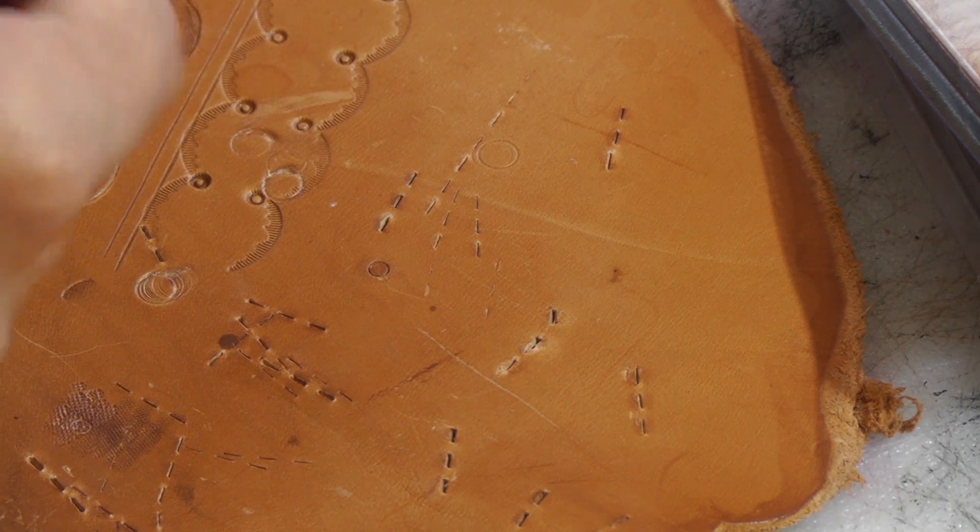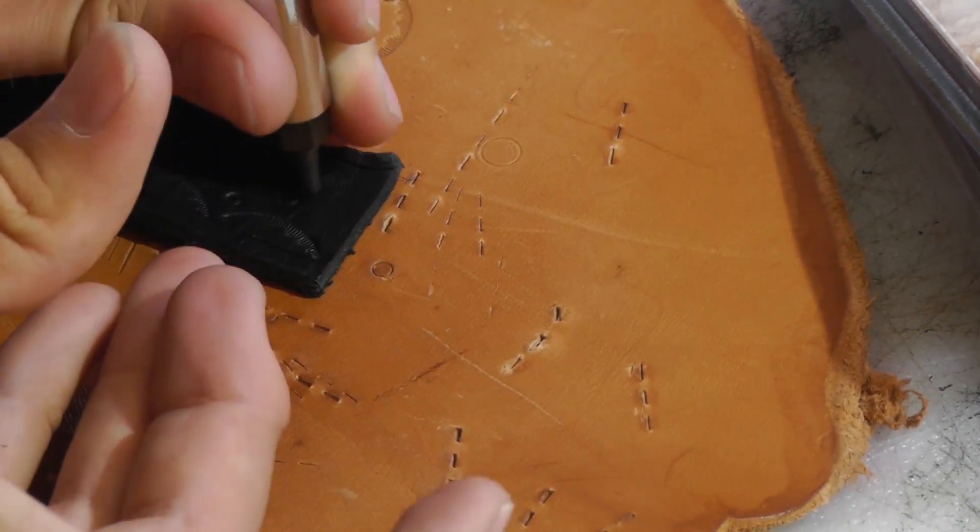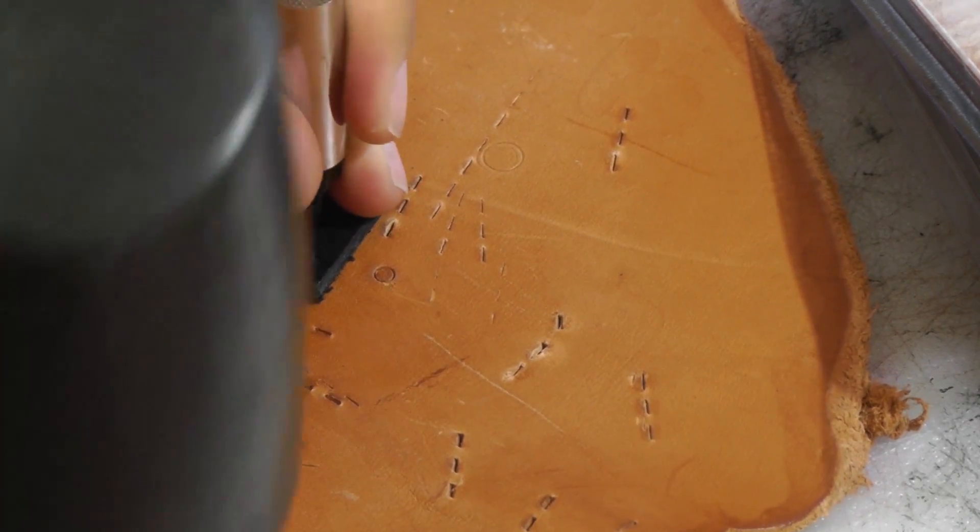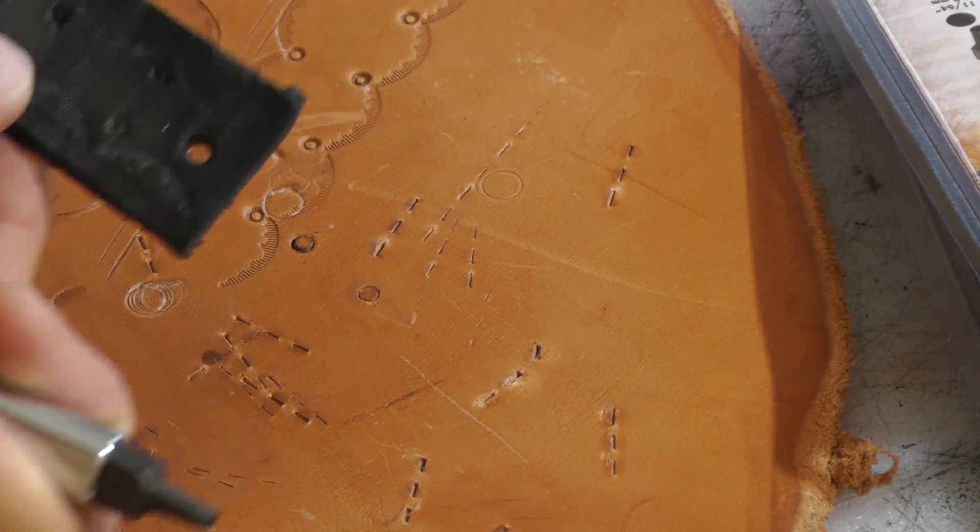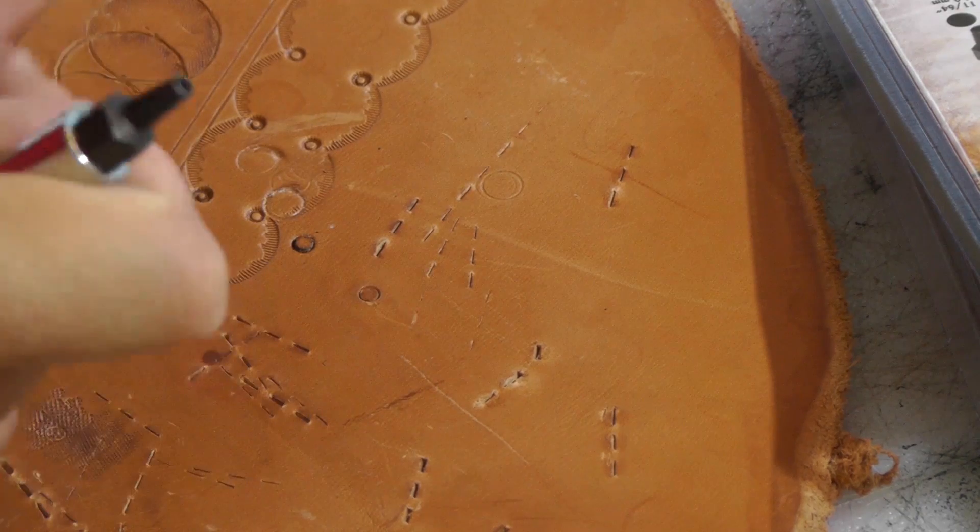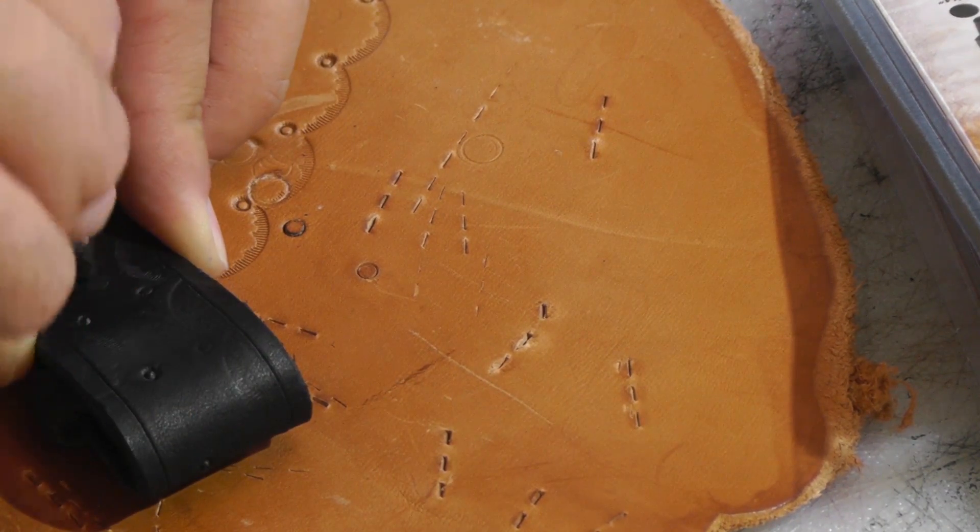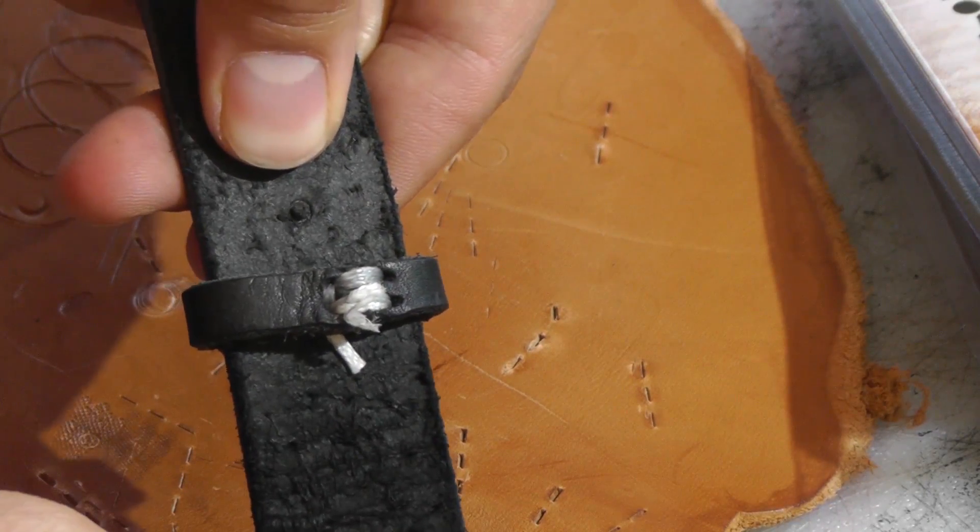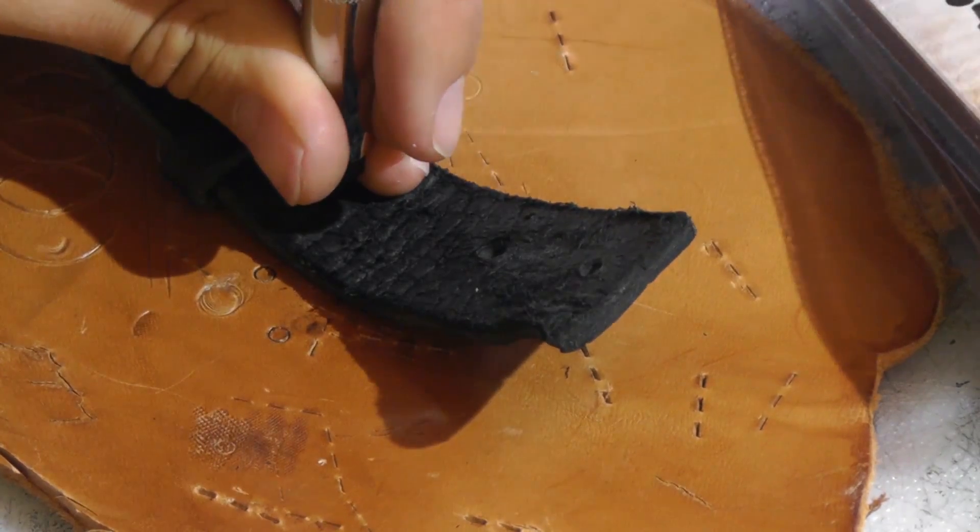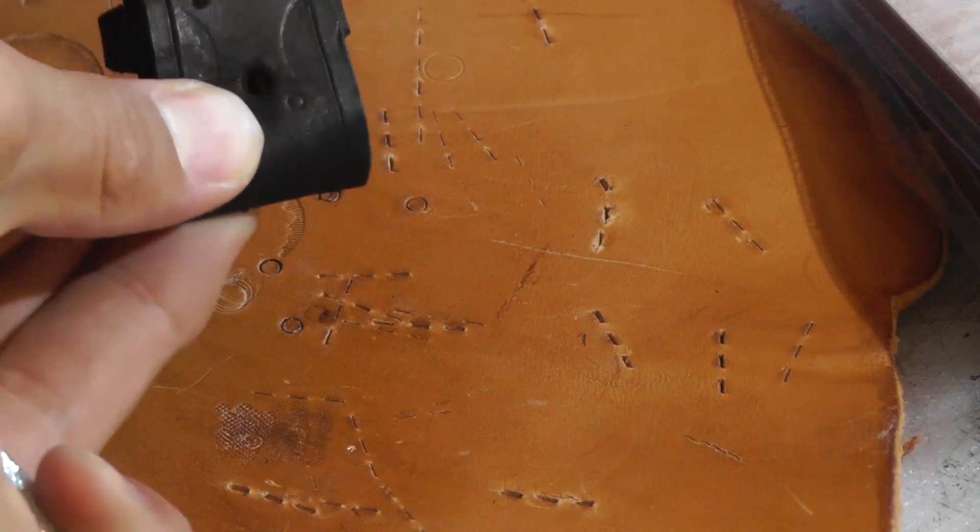So the first thing I'm going to do is punch a hole in this end here. There we go, one nice hole. Now to line it up, I'm going to fold it over and mark the leather on the other side. So there's a very small cut out hole that you can see right there. And I'm going to punch that hole through. There you have it, two holes that line up nicely together.